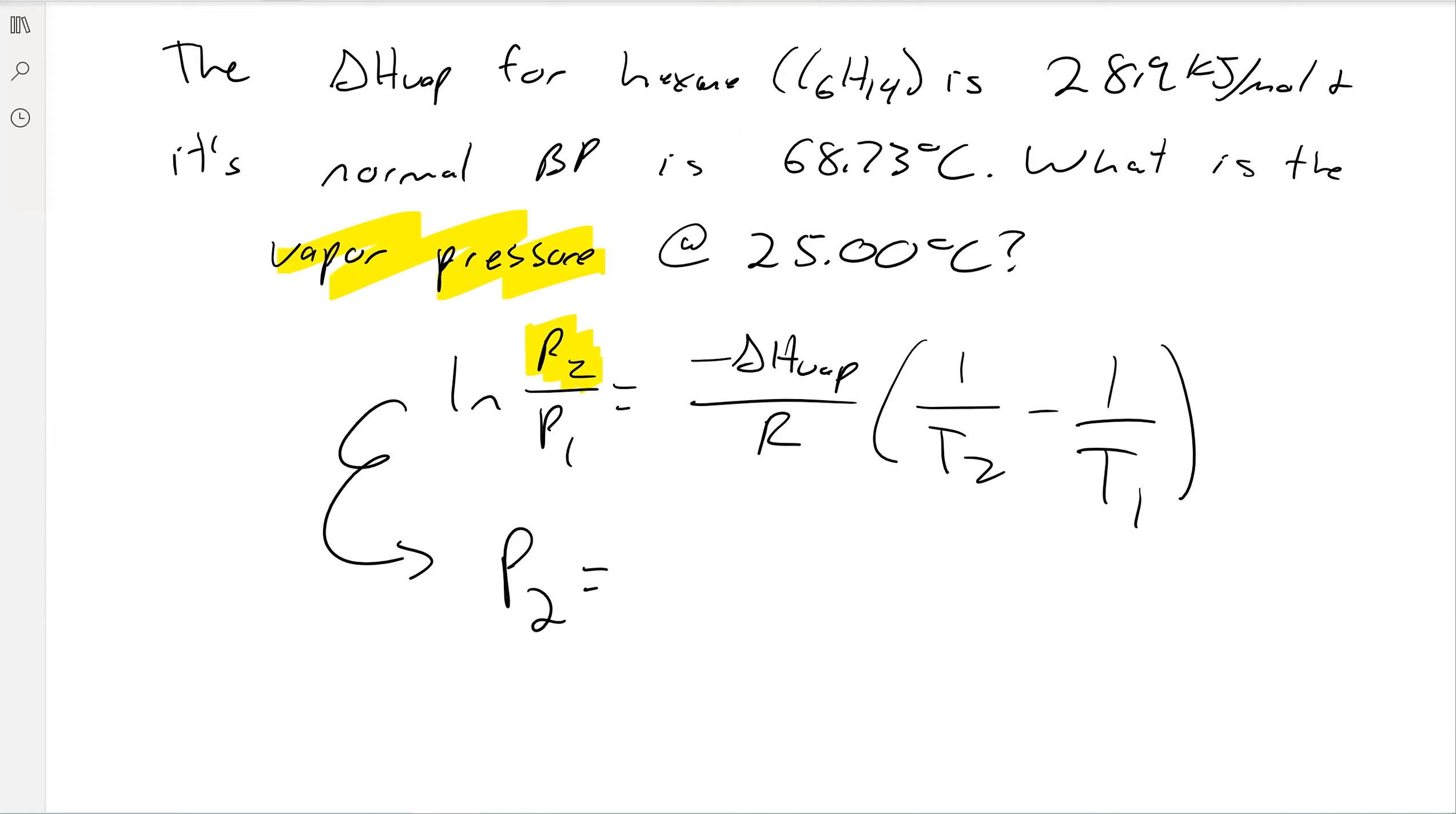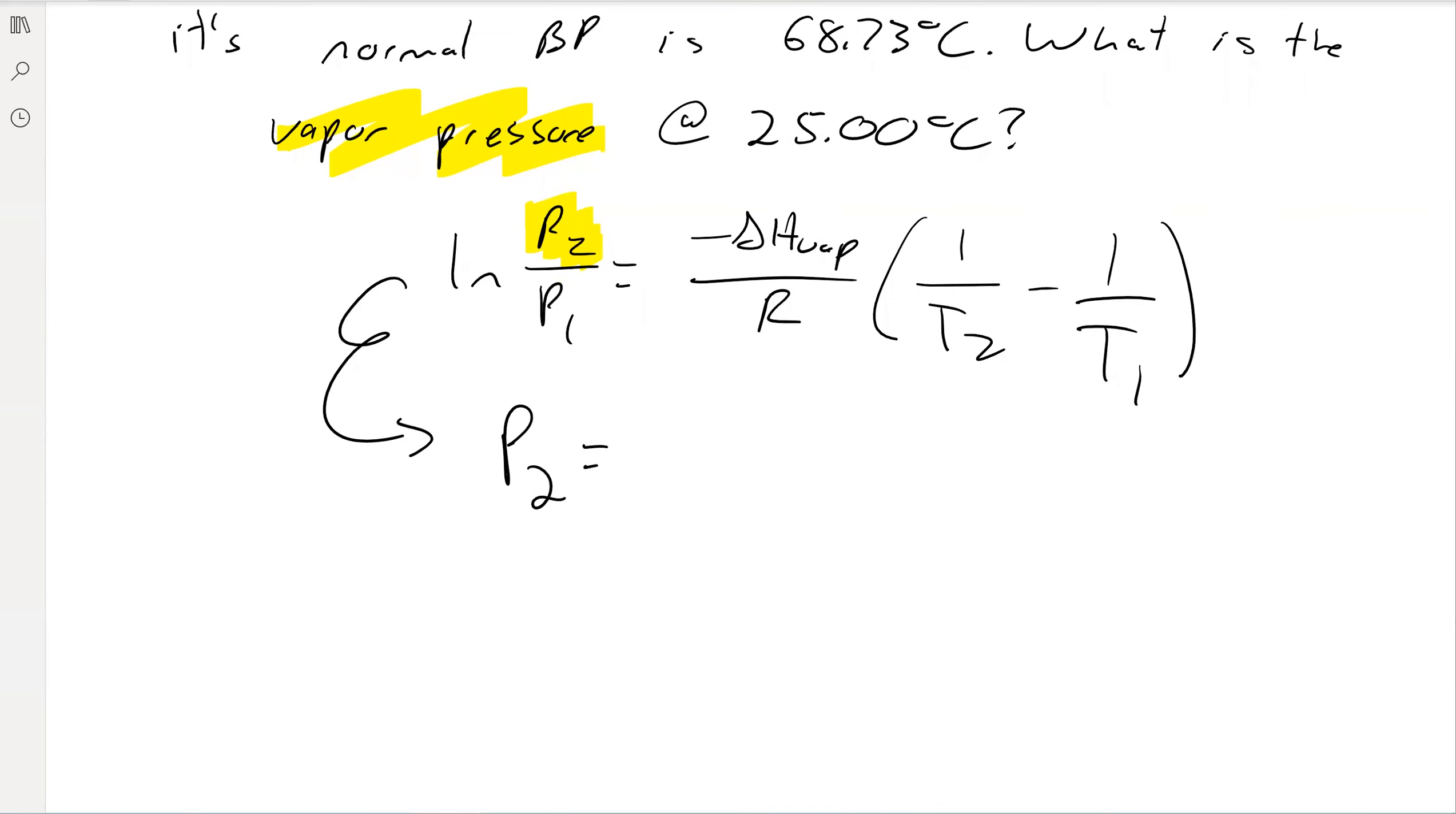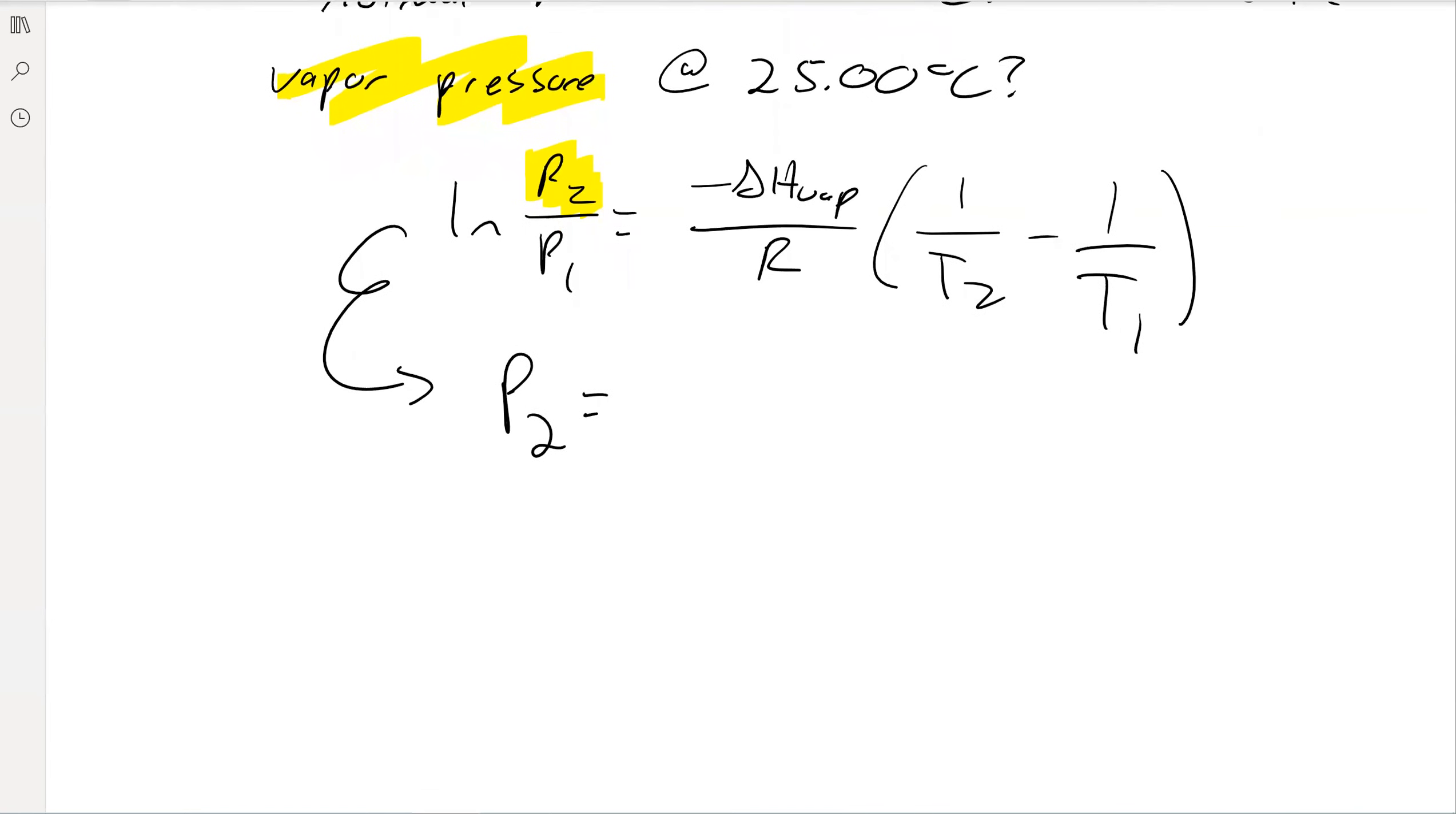In this case, I'm going to raise both sides to the power of e, and then multiply both sides by P1. So then that becomes e to the negative delta H of vaporization over R times 1 over T2 minus 1 over T1, all of that times P1.